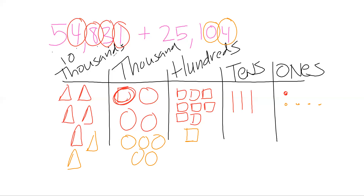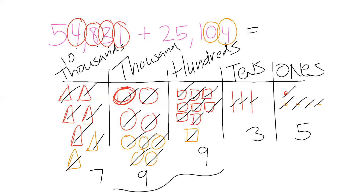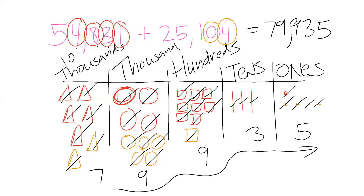Now we count and get our sum: five ones, three tens, nine hundreds, nine thousands, seven ten thousands — that gives us 79,935. So 54,831 plus 25,104 equals 79,935.